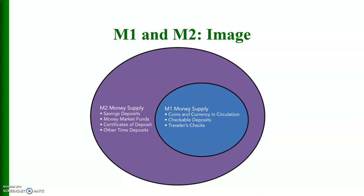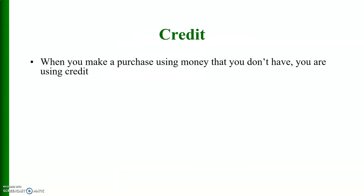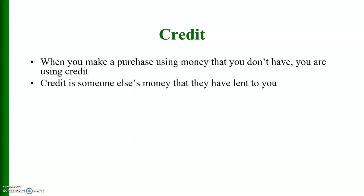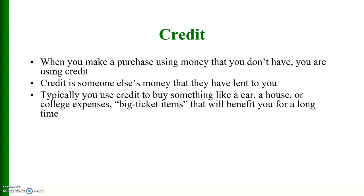M1 is a subset of M2. Credit: when you make a purchase using money that you don't have, you are using credit — it is someone else's money that has been lent to you.